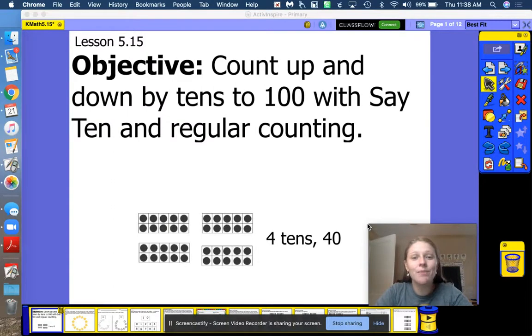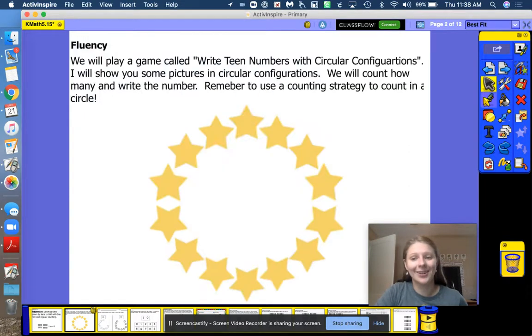Hi friends, today we're going to do module 5, lesson 15, objective: count up and down by tens to 100 with say 10 and regular counting. For this picture right here, we see that there are four tens and right here we've written four tens. We can also say that this is 40. There's 40 dots here. Let's get started.